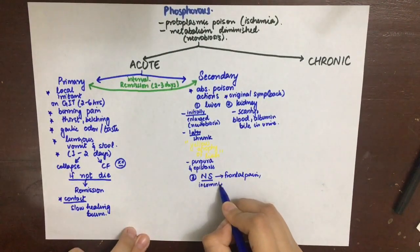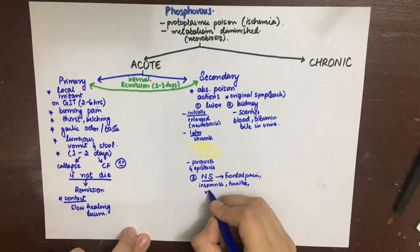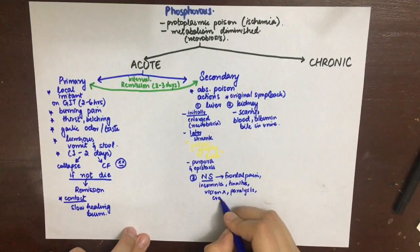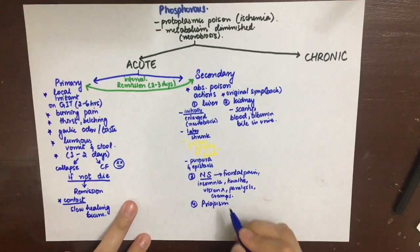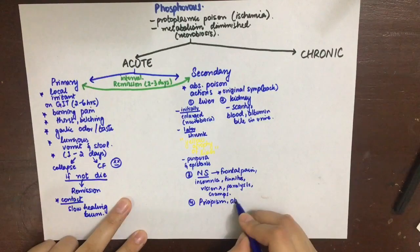Priapism and pregnant uterus abortion is also a feature of secondary phosphorus poisoning, and the color of the feces is pale, not luminous like in the primary poisoning.